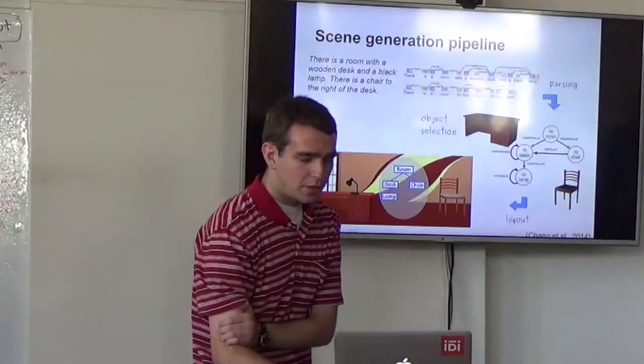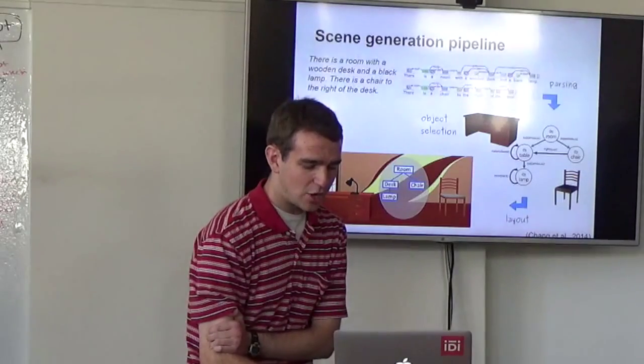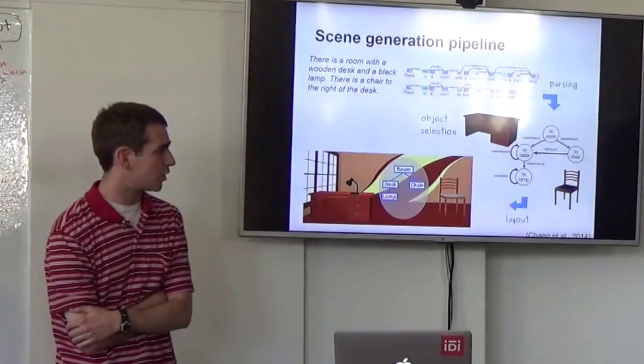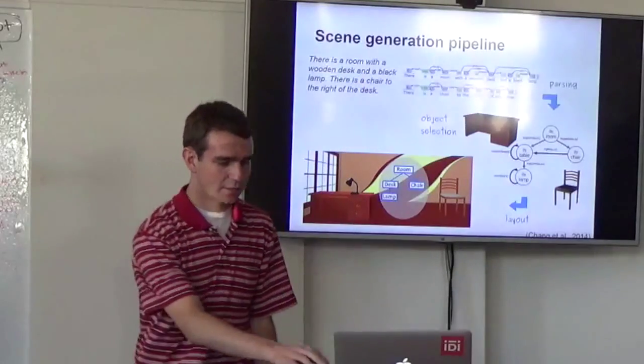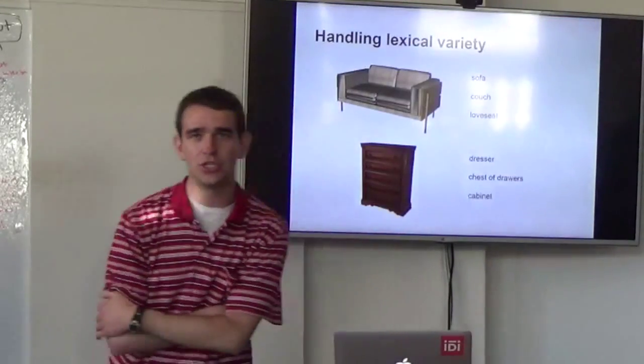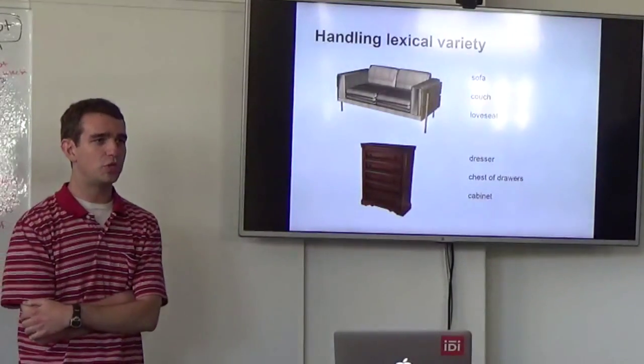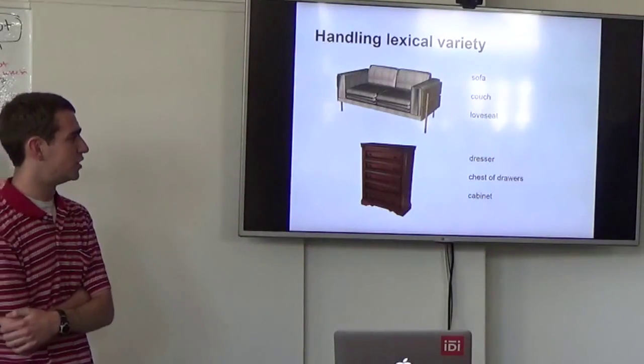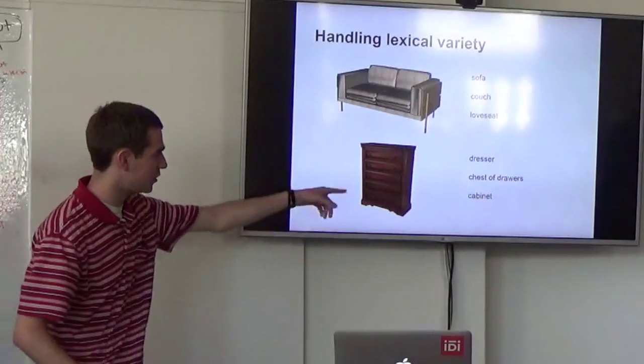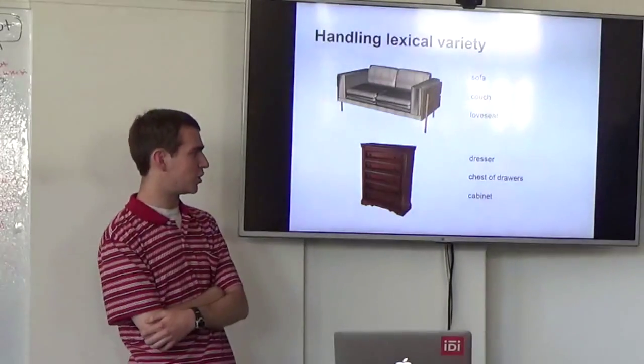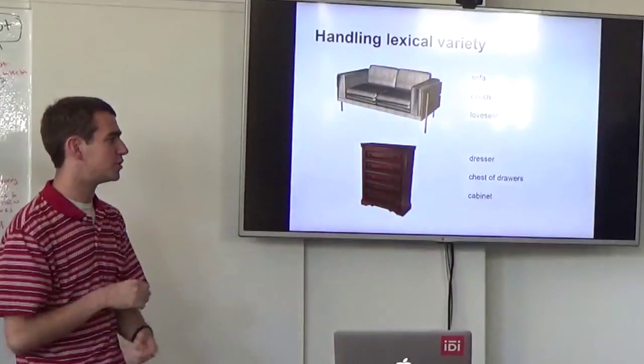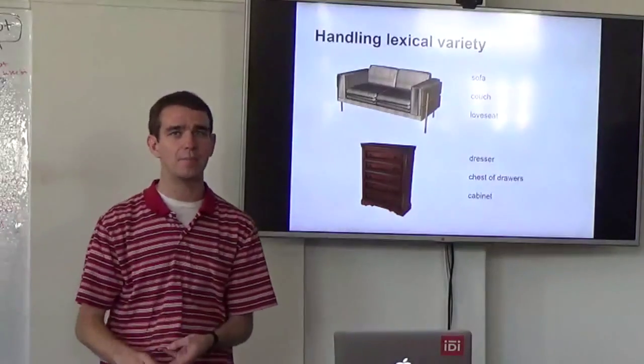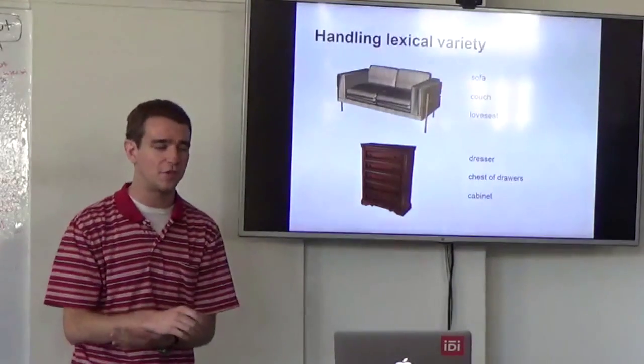And so the particular area of this that we're focusing on with our most recent work is this object selection task. And the main challenge of this is just that people use a huge variety of lexical knowledge in order to give these sort of descriptions. So, for example, this piece of furniture for storing clothes can be referred to as a dresser, a chest of drawers, a cabinet, cupboards, a bureau, what have you.